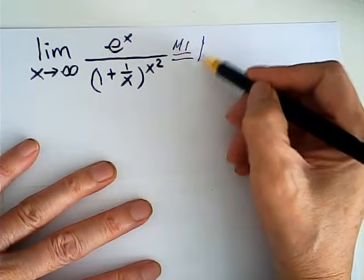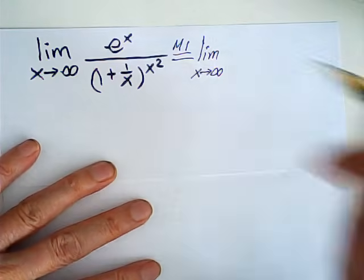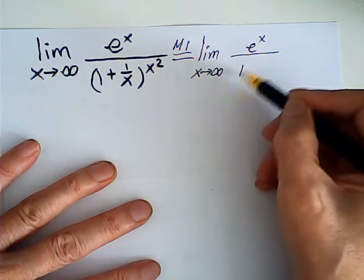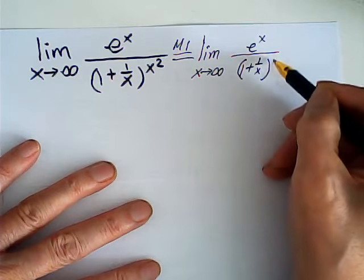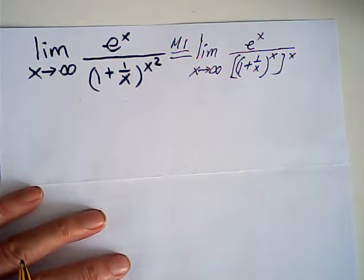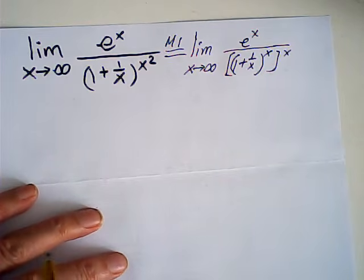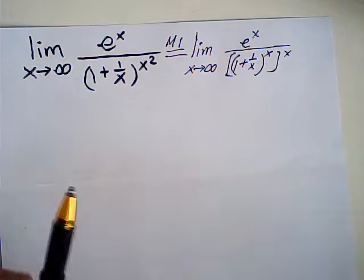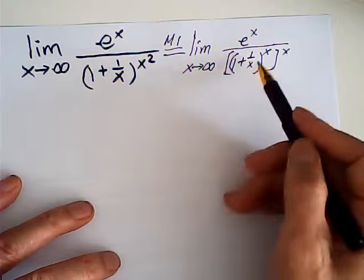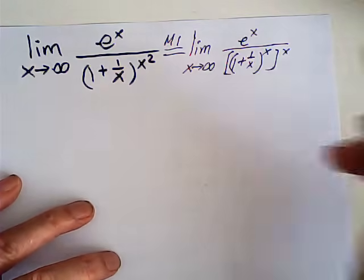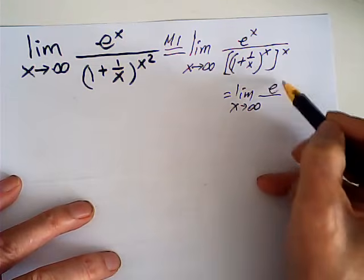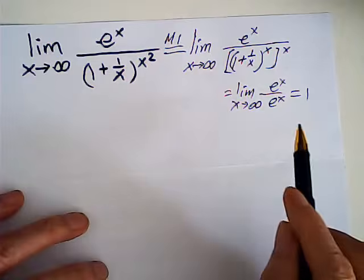Method one: I write this limit as the limit x approaches infinity of e to the x, times (1 + 1/x) to the power of x, and then to x. By the definition of e, (1 + 1/x)^x is e. So this becomes the limit x approaches infinity of e^x over e^x, which equals 1. That is method one.